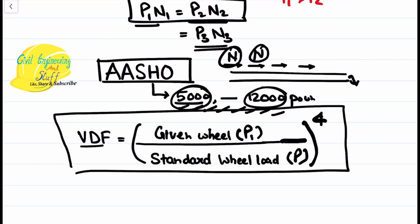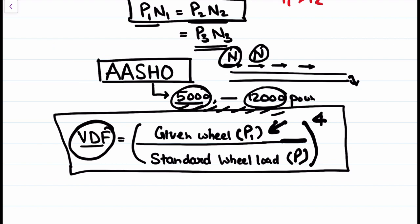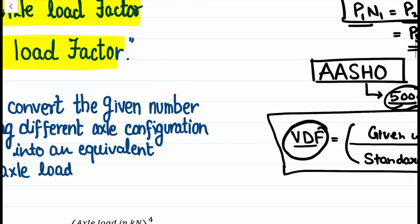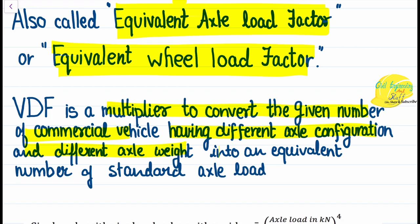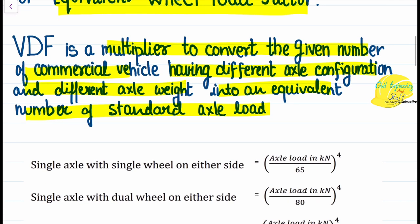The damaging effect caused by a vehicle of weight P1 relative to the standard wheel load is what is defined as the Vehicle Damage Factor, or Equivalent Wheel Load Factor, or Equivalent Axle Load Factor. Vehicle Damage Factor is a multiplier used to convert the given number of commercial vehicles having different axle configurations and different axle weights into an equivalent number of standard axle loads. As per IRC 37:2018, specific conversion units are defined.